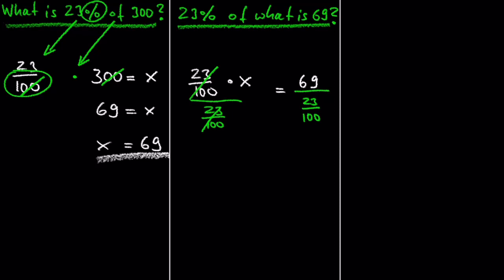we get x equals 69 divided by 23 over 100. Dividing by a fraction is the same as multiplying by the reciprocal of the fraction. So we get 69 times 100 over 23. 69 divided by 23 is 3, and 3 times 100 is 300.